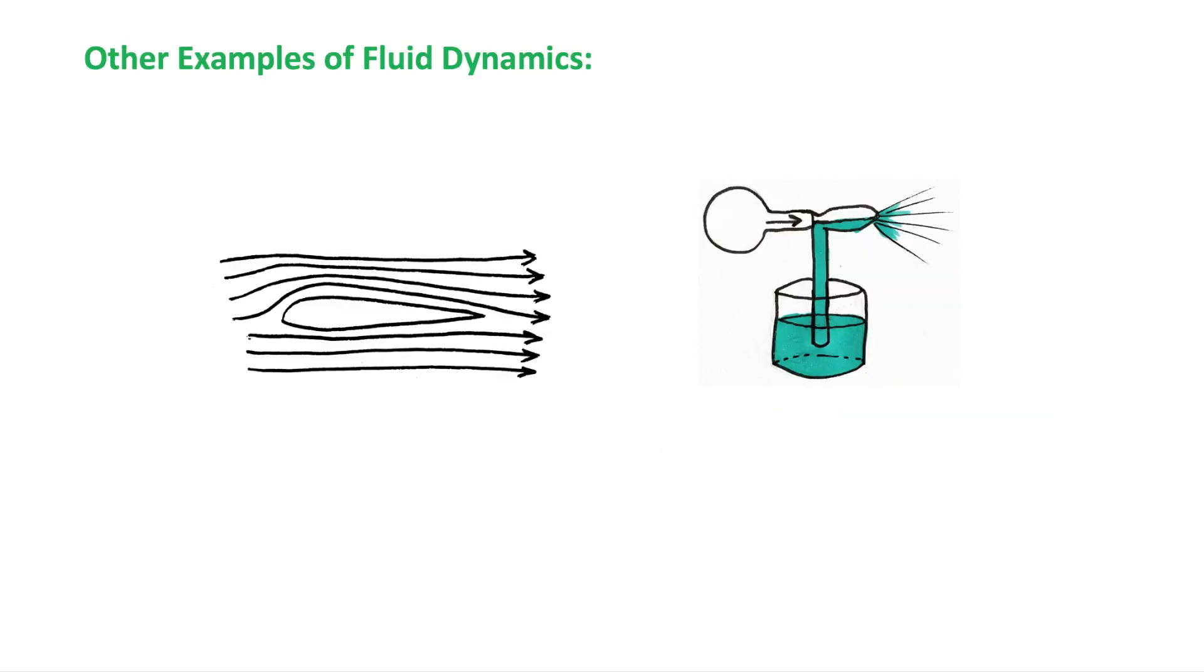So, let's consider some other applications of fluid dynamics. First, the wing of an airplane. So, the airspeed above the wing is higher than below the wing, as you can see from the streamlines. This difference in pressure results in an upward force or lift. But lift can depend on many other factors, but the reduced pressure above the wing makes the greatest contribution to the lift.